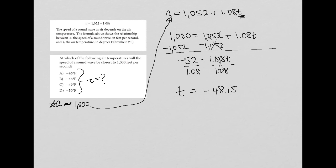Now remember, we used 1,000. The question said closest to 1,000, so we're not necessarily looking for an exact answer. But the best answer, since we found that T is negative 48.15, will be choice B at negative 48. That'll get us closest to an A value of 1,000.